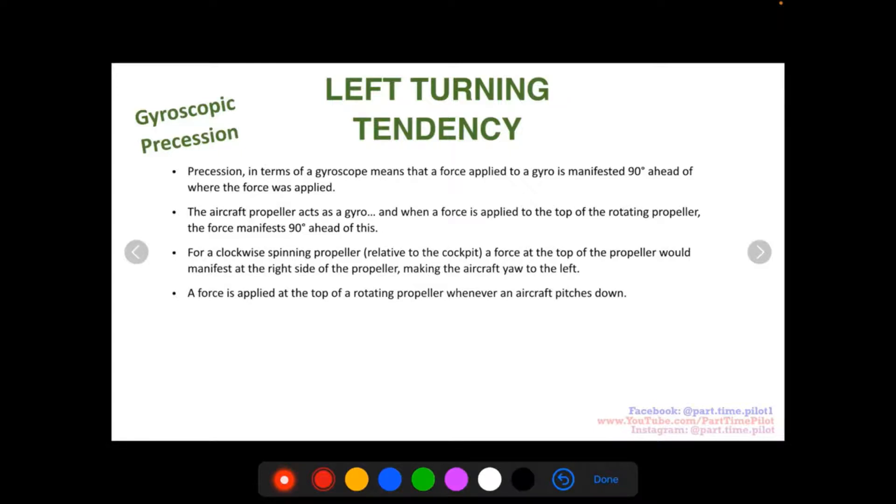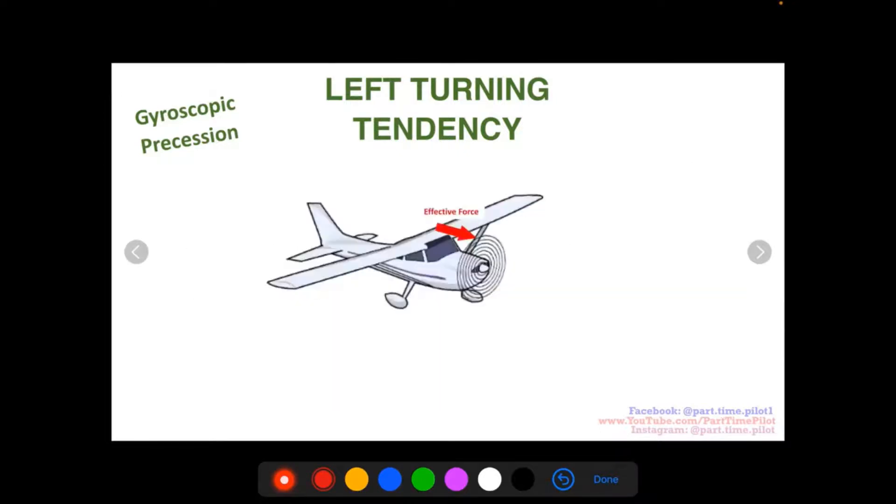So a force applied at the top of a rotating propeller when the aircraft pitches down. Okay, so when do we get a force applied to the top of a rotating propeller? Well, anytime we pitch down, this is essentially a force on the top of the propeller. So if you are pitched up and you pitch down, that force on the top of the propeller is going to manifest itself on the right side of that propeller.